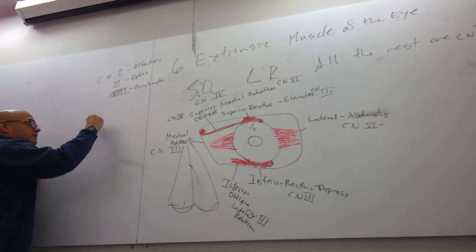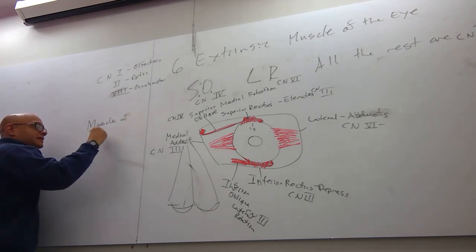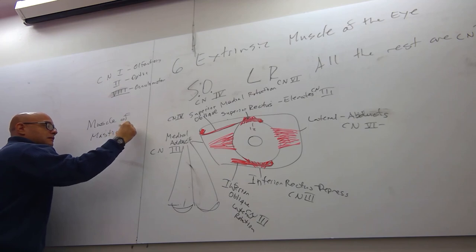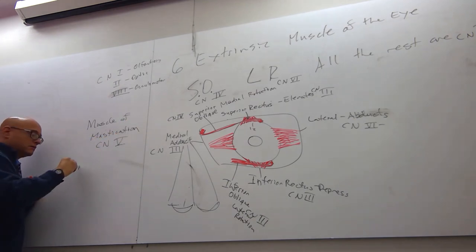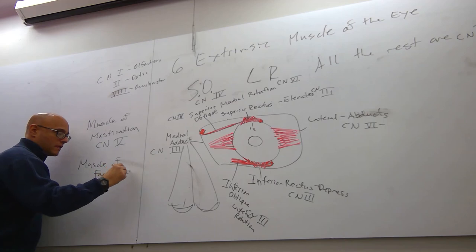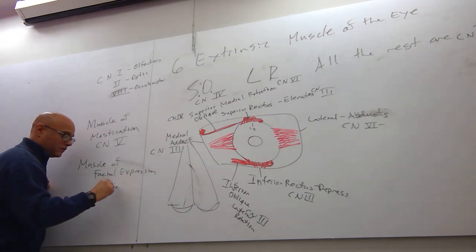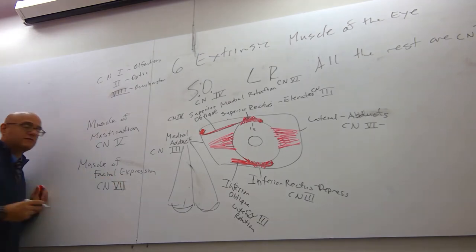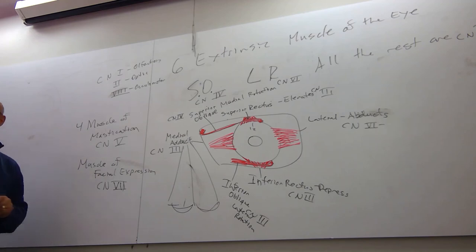Now watch. Muscles of mastication, cranial nerve five. There's only four muscles of mastication. This guy, the temporalis. This guy over here, the masseter. And two muscles they'll never be able to test you on because they're deep into the bottom of the skull. Between the mandible and the skull. They're called the lateral and medial pterygoid muscles. Those are your muscles for chewing.